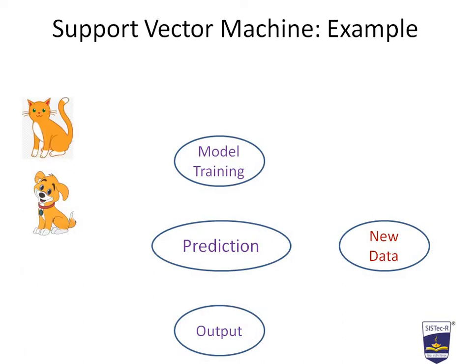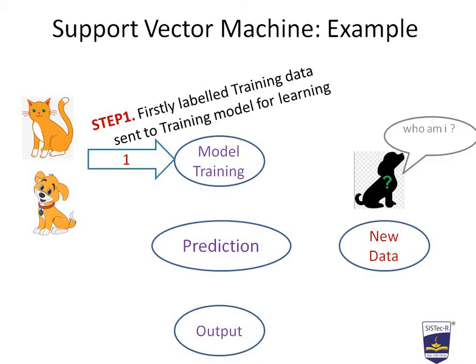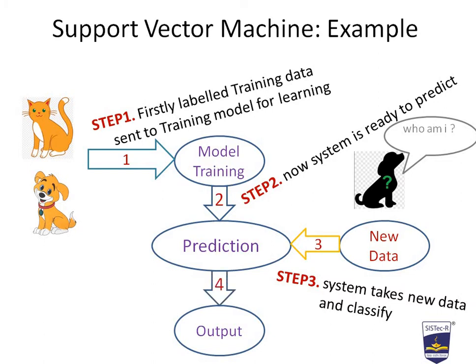Suppose we have trained our system on image patterns of cats and dogs, and new data comes — how does it generate the result and recognize the given image pattern? In step one, labeled training data is sent to the training model for learning. In step two, when training is completed, prediction begins. In step three, new data is passed to the prediction system, which takes the new data and classifies it.